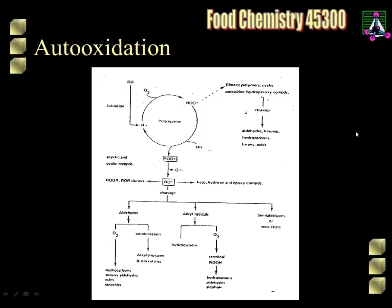Looking at our auto-oxidation scheme, we find R dot and ROO dot fairly easily. Here's the R dot, it goes to ROO dot, and this keeps going around, cranking up these hydro peroxides which can then fall apart and produce all this smelly stuff — so what we want to do is keep this from happening.